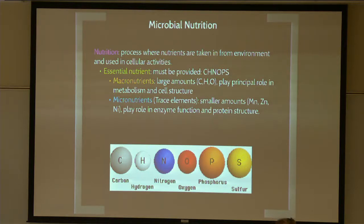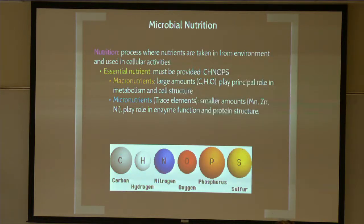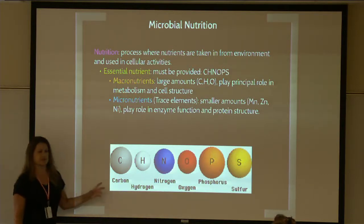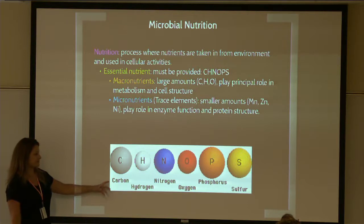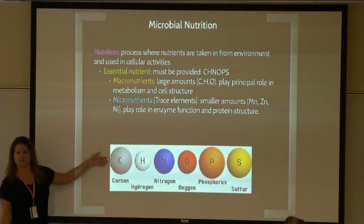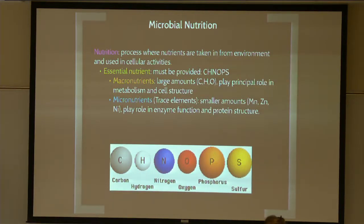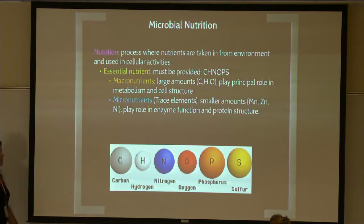Macro versus micro — macro means large, micro means small. Macronutrients are needed in large doses; micronutrients are needed in smaller amounts — you can think of them as trace elements. The six most crucial essential nutrients for these organisms are summed up by the acronym SCHNAPPS. I'm just going to say that term over and over — it's an easy way to remember it.